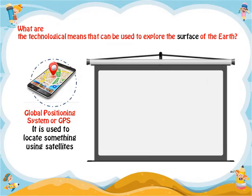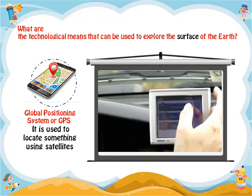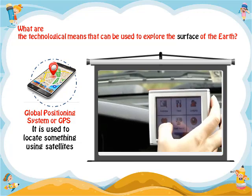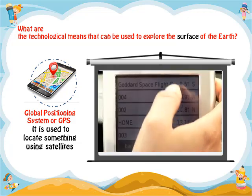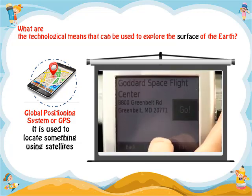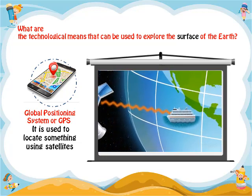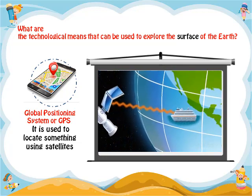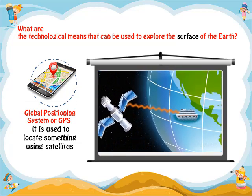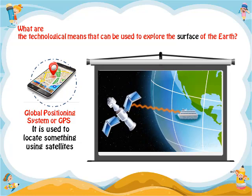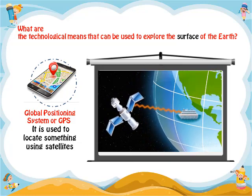Global Positioning System, GPS for short, is a method of locating something using satellites. We often use the term GPS when referring to the receiver found in a car, but that's not entirely accurate. GPS is more accurately defined as a navigational system that relies on satellite signals to show an object's location.